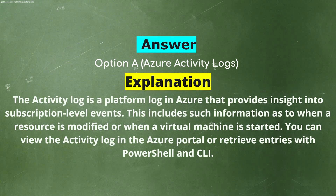Explanation. The Activity Log is a platform log in Azure that provides insight into subscription-level events. This includes information such as when a resource is modified or when a virtual machine is started. You can view the activity log in the Azure portal or retrieve entries with PowerShell and CLI.